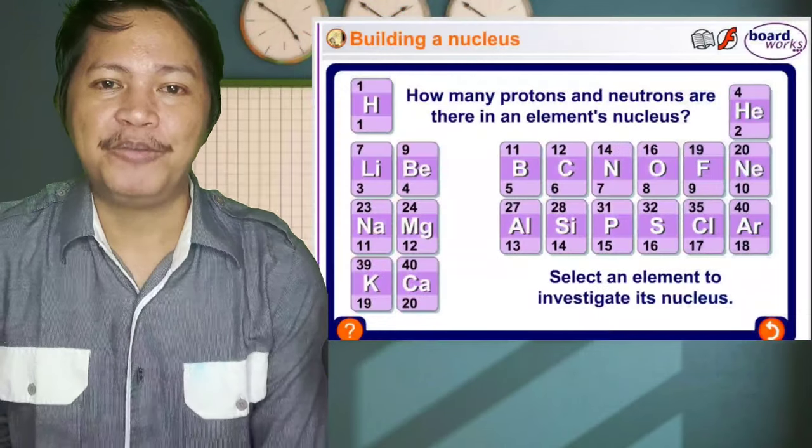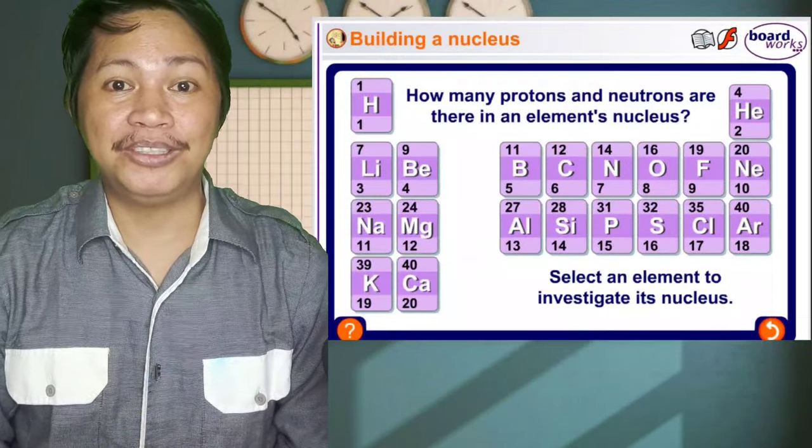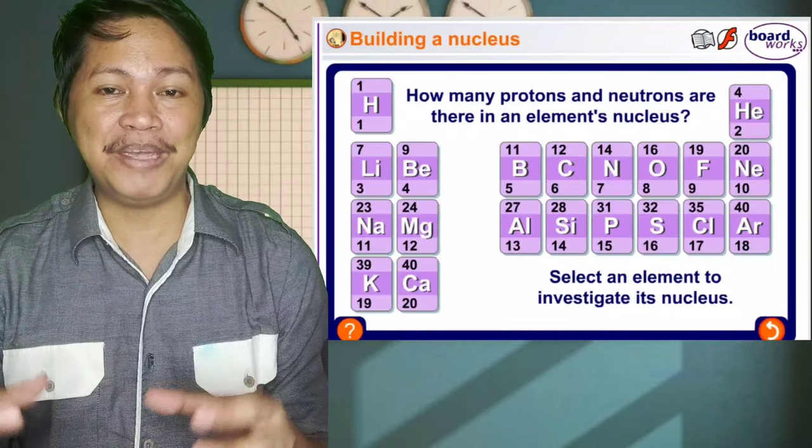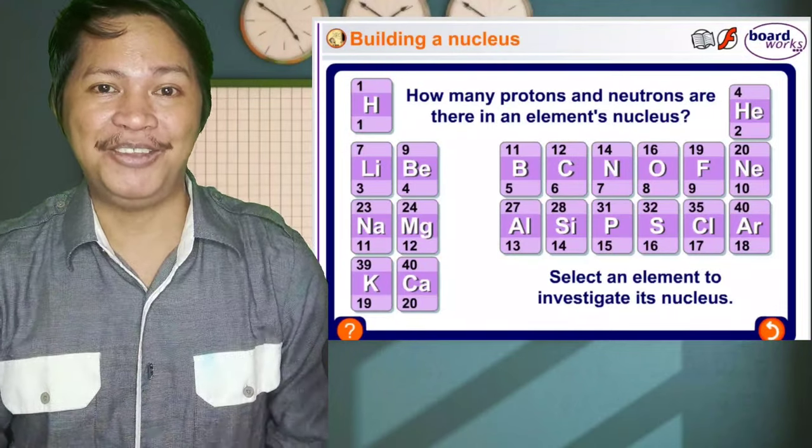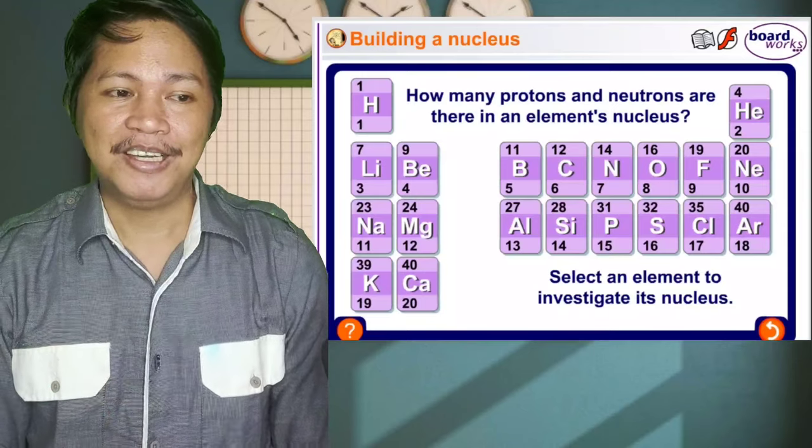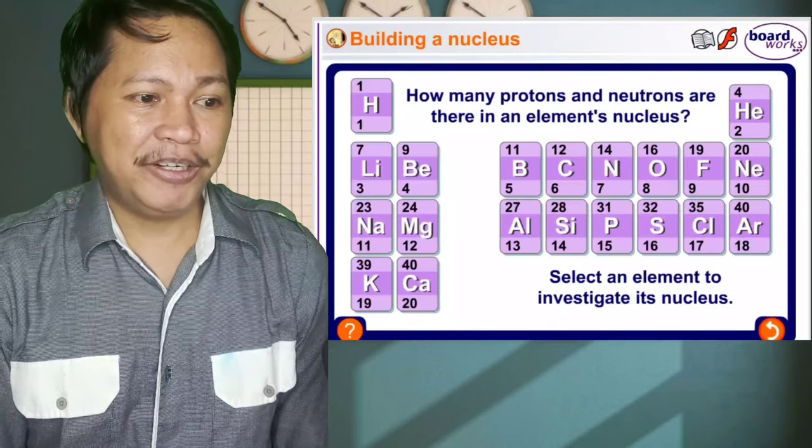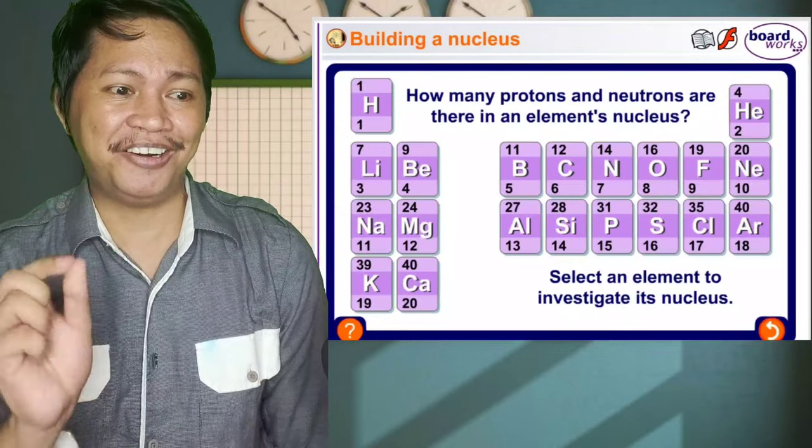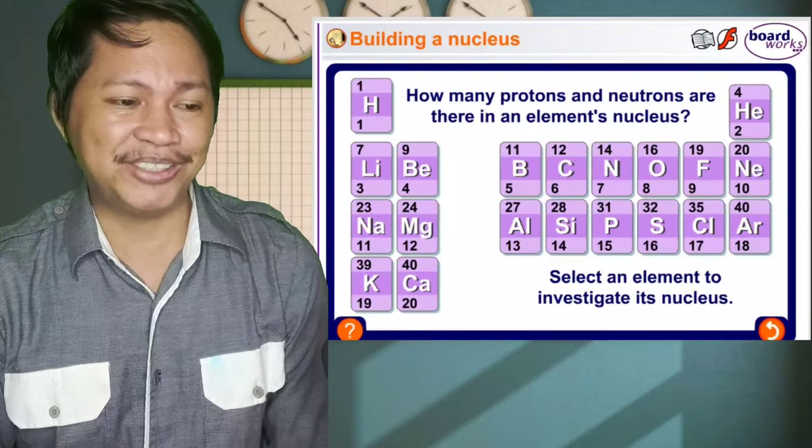So again, in building the nucleus, we need to consider the protons and neutrons. Why? Because that is the component to make up the nucleus of the atom. So here we have the periodic table. You are asked how many protons and neutrons are there in the element's nucleus. For example, we have calcium.